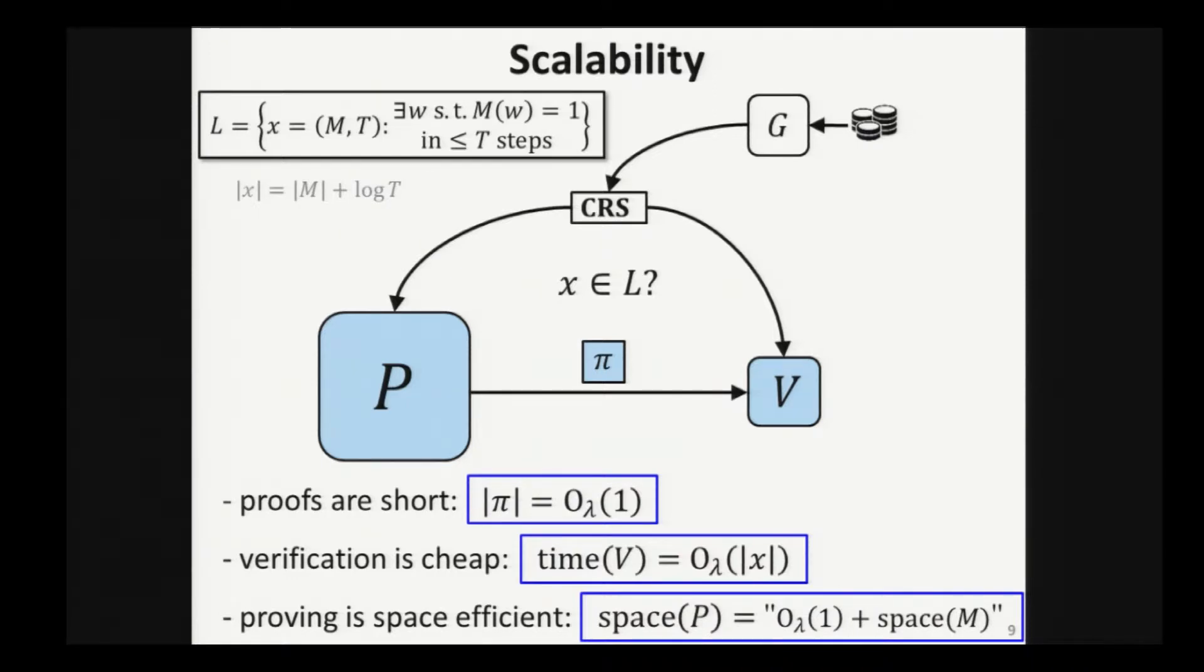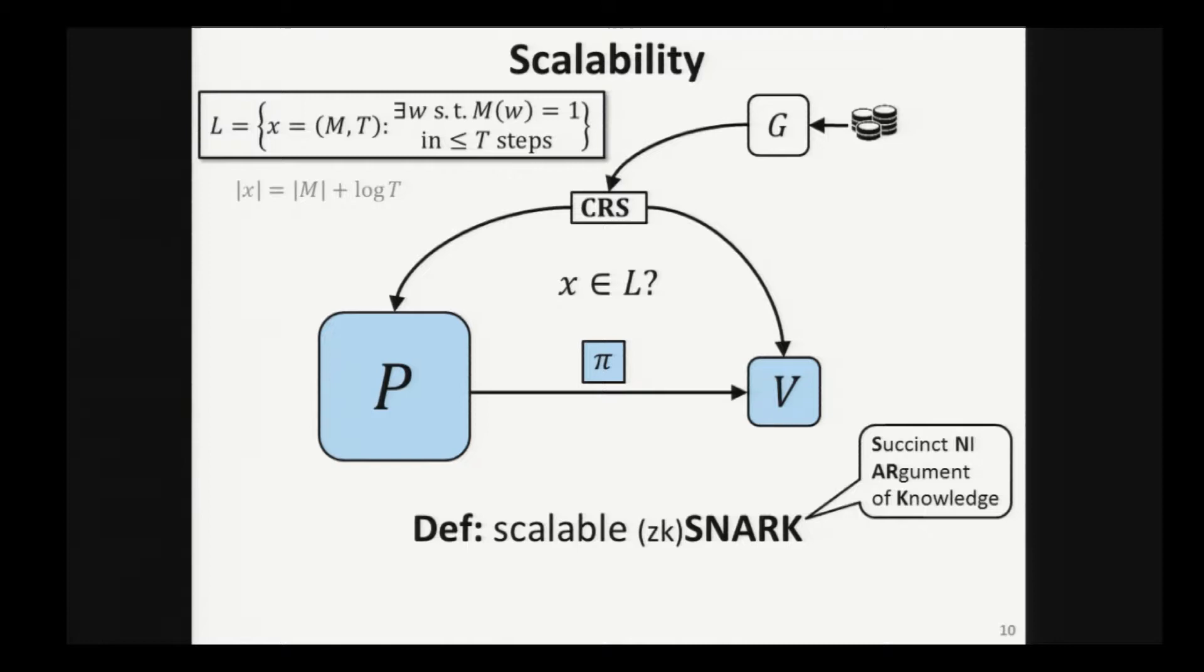And you see here that nothing grows linearly with T, and at least in our mind, this is giving a sign as T grows large, then maybe this system can scale better. Let's call it a Scalable Zero Knowledge Succinct Non-Interactive Argument of Knowledge, or Scalable SNARK for short. And concretely, in this paper, we're interested in trying to obtain a working prototype of Scalable SNARKs. So that's the goal that we set out in this paper.